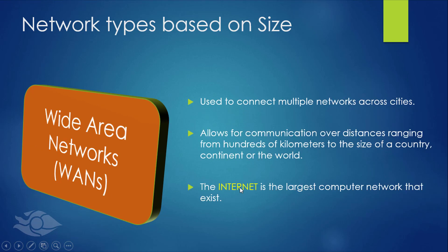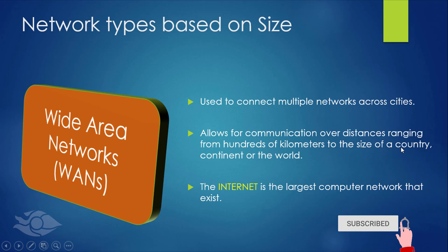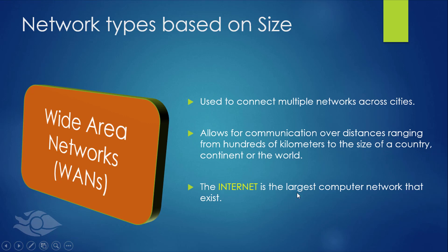The last type of network we'll talk about is the wide area network. It is one that connects multiple networks across cities to allow for intercommunication over a large distance, ranging from hundreds of kilometers to the size of a country, a continent, or even the entire world. An example of a wide area network is the internet, and it is the largest network of computers that exist.